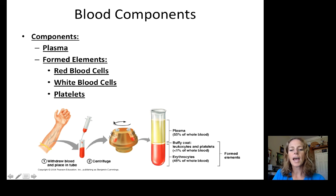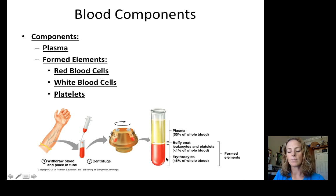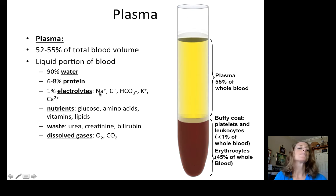If we take a blood sample and centrifuge it, the heavy stuff moves to the bottom and the lighter stuff to the top. The liquid portion that floats to the top is plasma — about 55% of whole blood. Then there's a small buffy coat containing white blood cells and platelets, and the rest is red blood cells — about 45%. These make up the formed elements of blood.